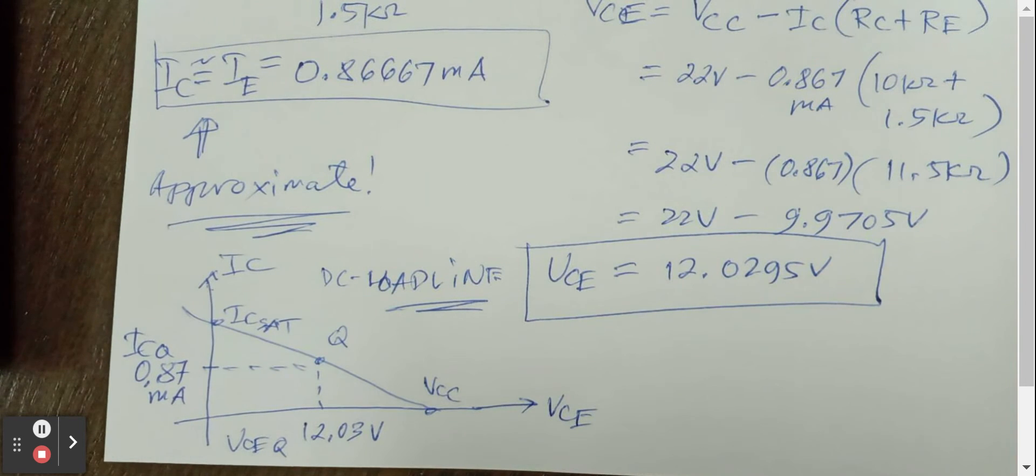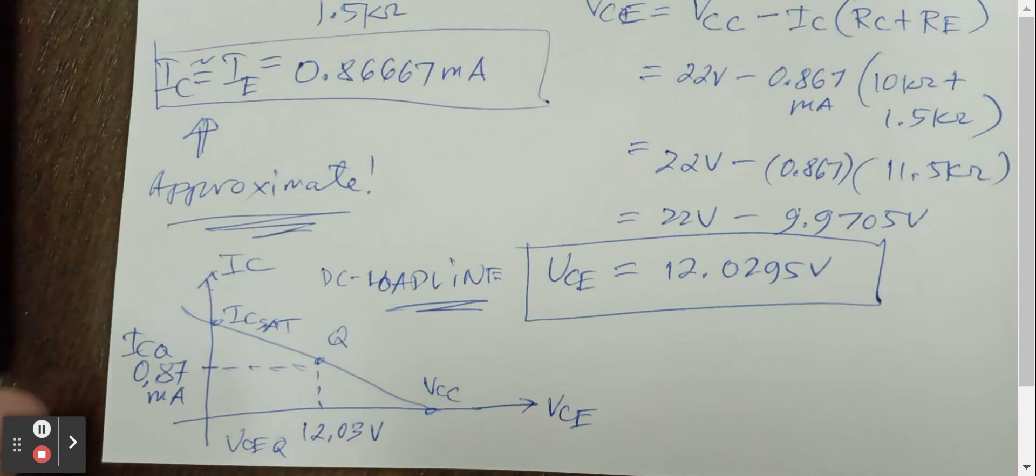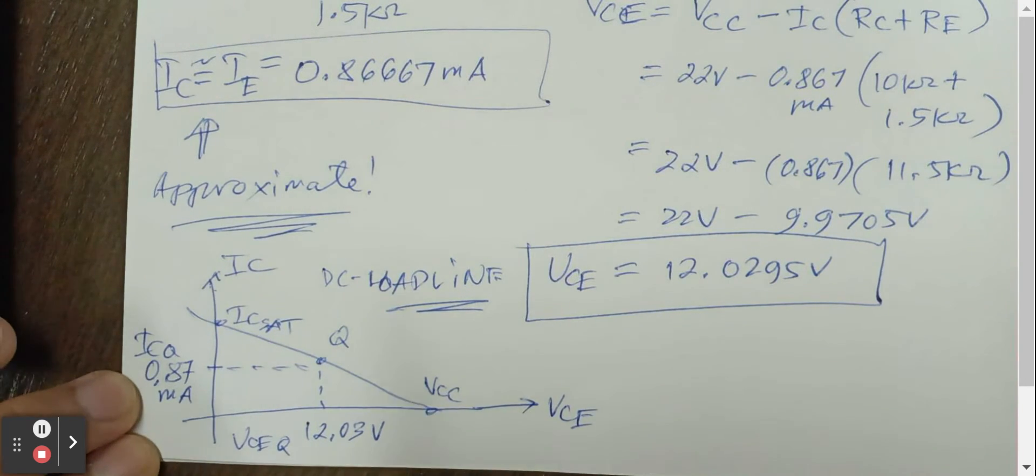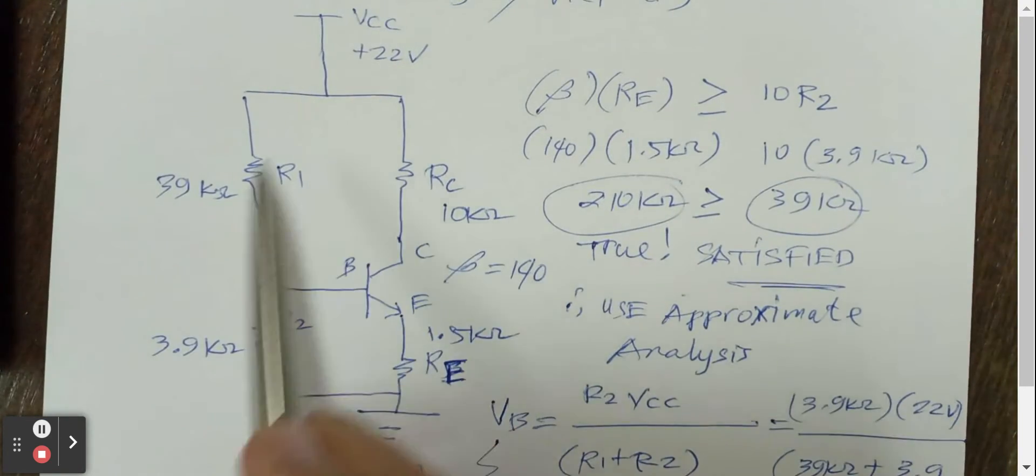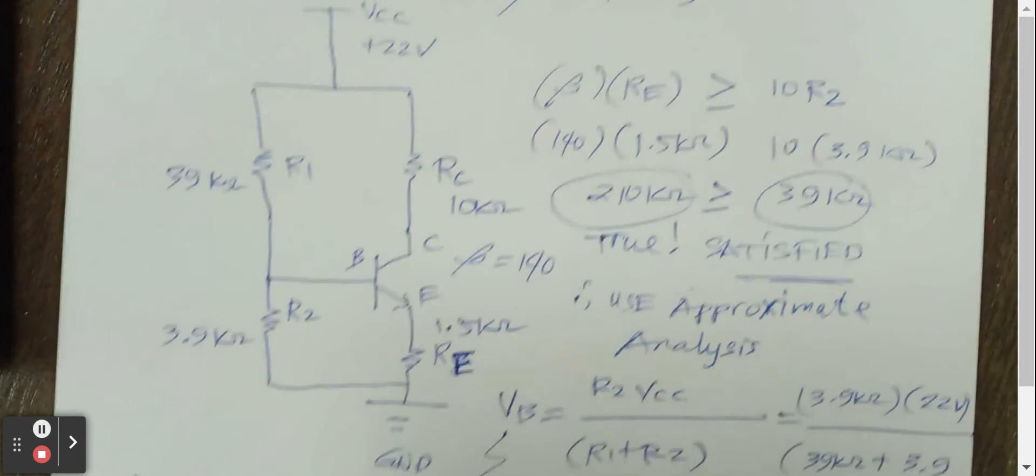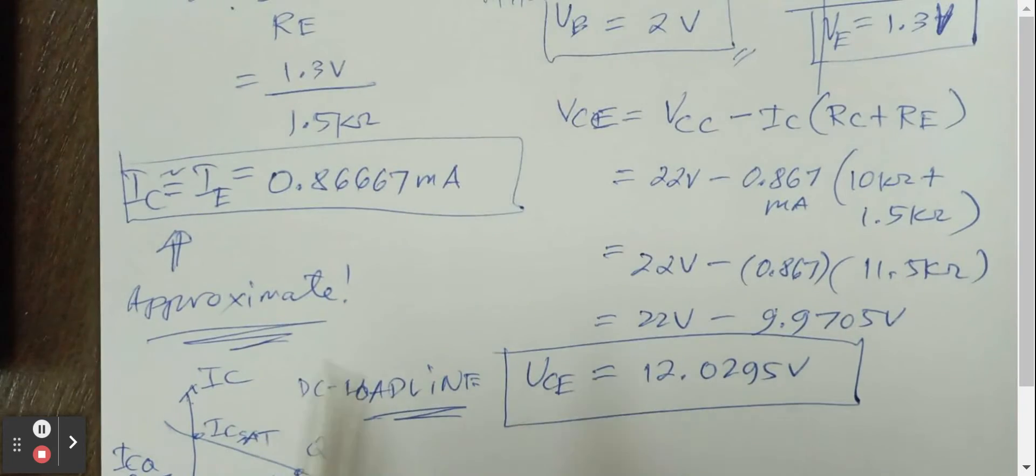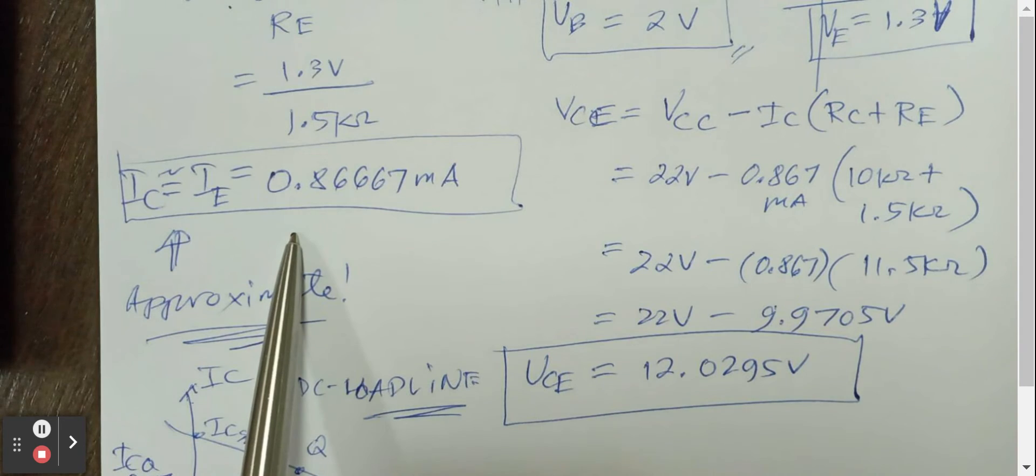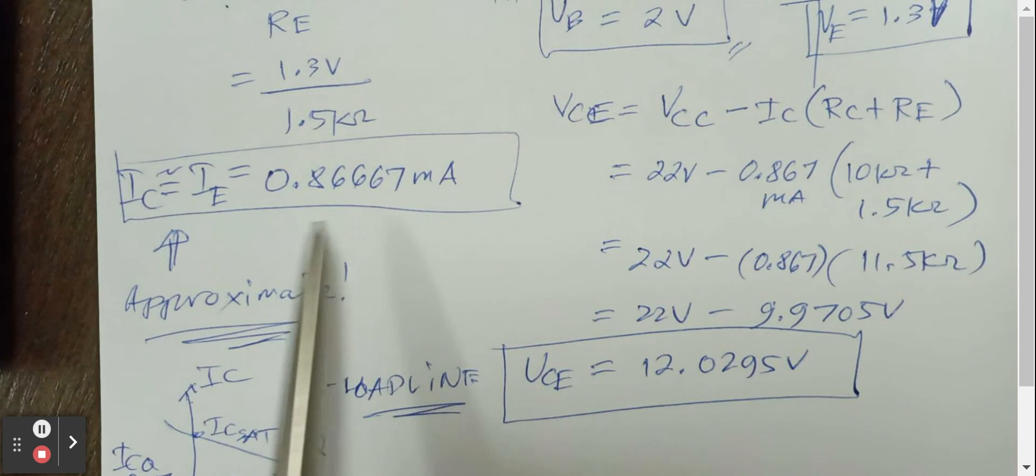So this is what we will do if we are doing the approximate analysis. But later on, if you do the same question with the exact analysis, you will be getting an Icq of around 0.8463. But for this one, approximate analysis, we had 0.87. So 0.8463 in exact analysis is very close to 0.8667.